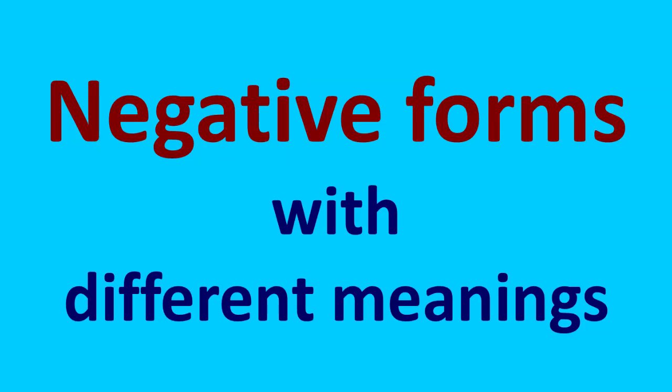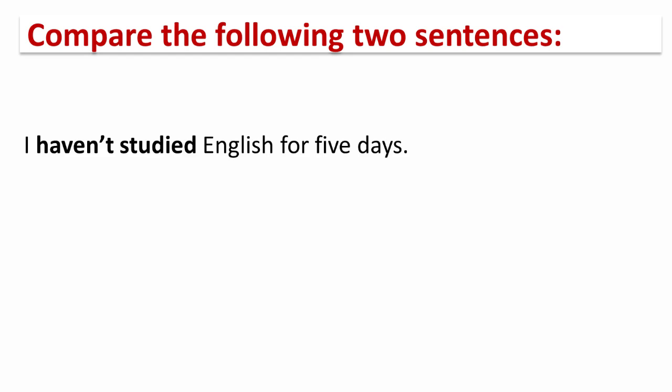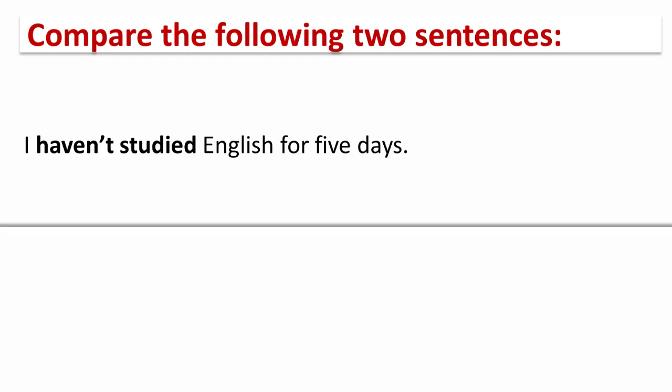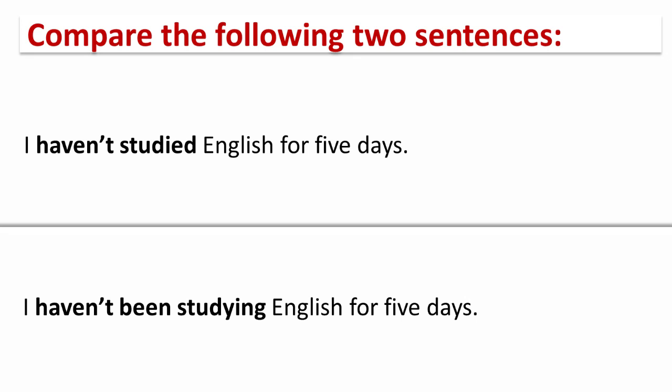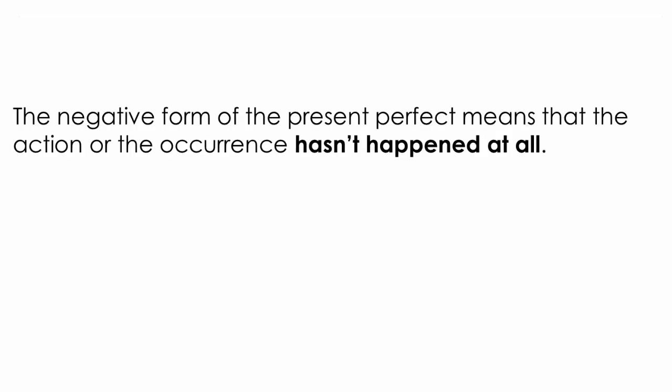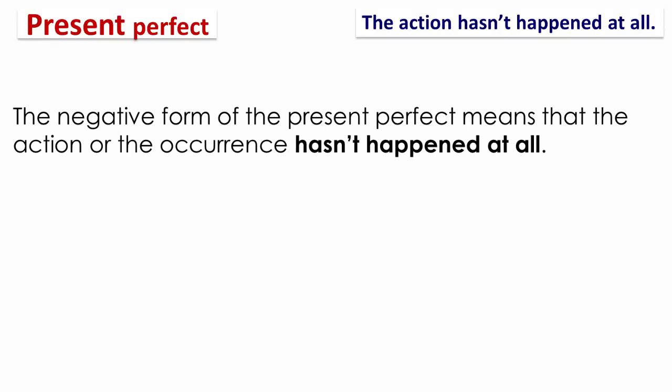Negative forms with different meanings. Compare the following two sentences: 'I haven't studied English for five days' and 'I haven't been studying English for five days.' The negative form of the present perfect means that the action or the occurrence hasn't happened at all.